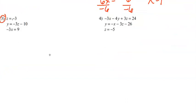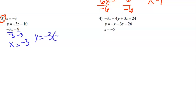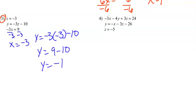Let's do number 3. Solve for X on this third equation — it looks very easy to solve. So we have X equals negative 3. Plug that in to find Y: Y equals negative 3 times negative 3 minus 10, Y equals 9 minus 10, Y equals negative 1. So your solution point is (negative 3, negative 1, negative 3).